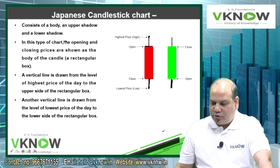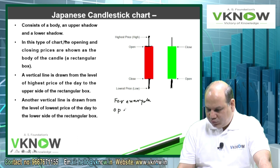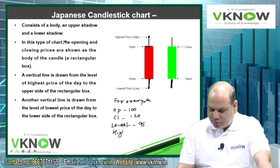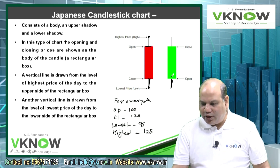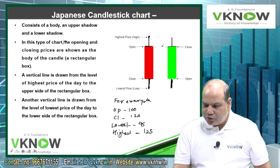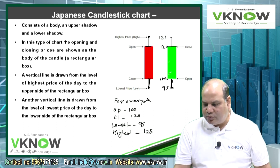So this is how the candlestick chart is drawn. For example, if the opening price is 100, closing price is 120, the lowest price during the day was 95 and the highest price was 125, so first we have to think whether to draw a green candle or a red candle. It will be a green candle because closing price is more. So this line will represent 120 rupees, this point will represent 125, opening price 100 rupees and the lowest price during the day was 95.